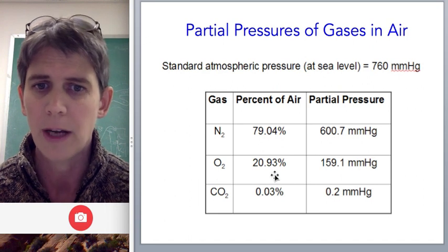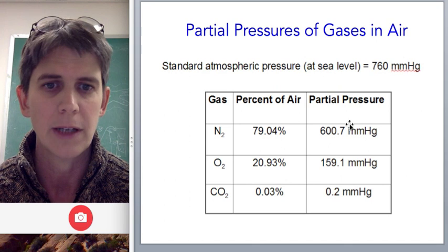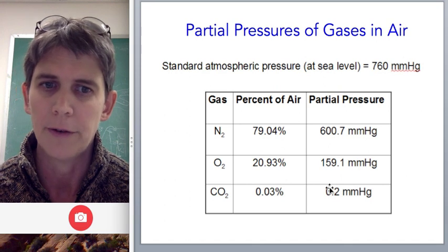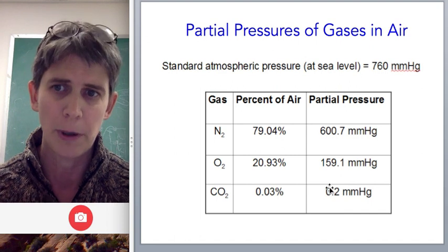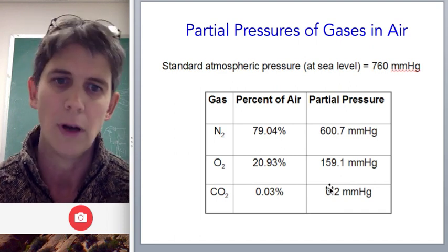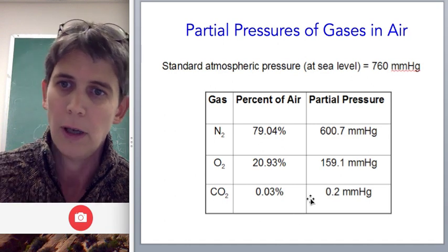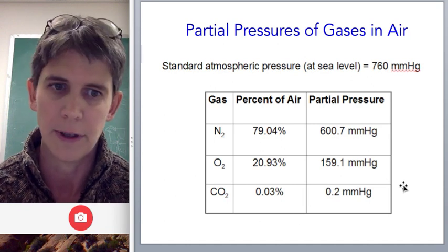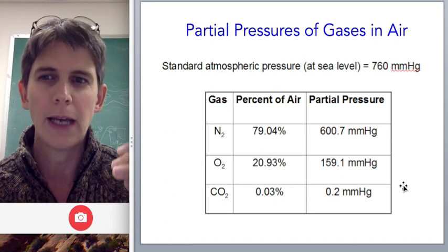The rest of air is mostly oxygen, about 21%. So if you multiply that 21% times the 760, you get 159 mmHg. So that's oxygen's partial pressure in air at sea level, 159 mmHg. Carbon dioxide makes up very little of air relative to these other two gases. Okay, so that's what partial pressure is in air.